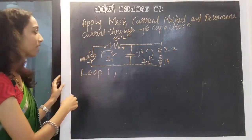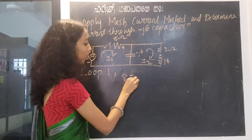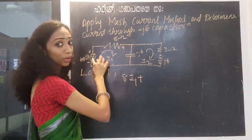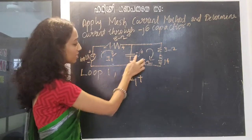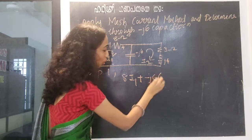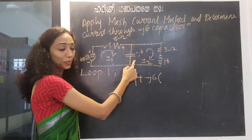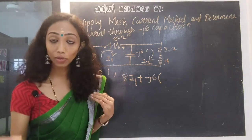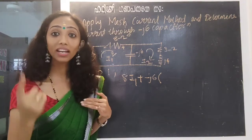8 ohm resistance — first loop current, we have 8I1. 8I1 plus. This is minus J6, so minus J6 into. This is a common component between loop 1 and loop 2. For common components, we will consider the current positive.